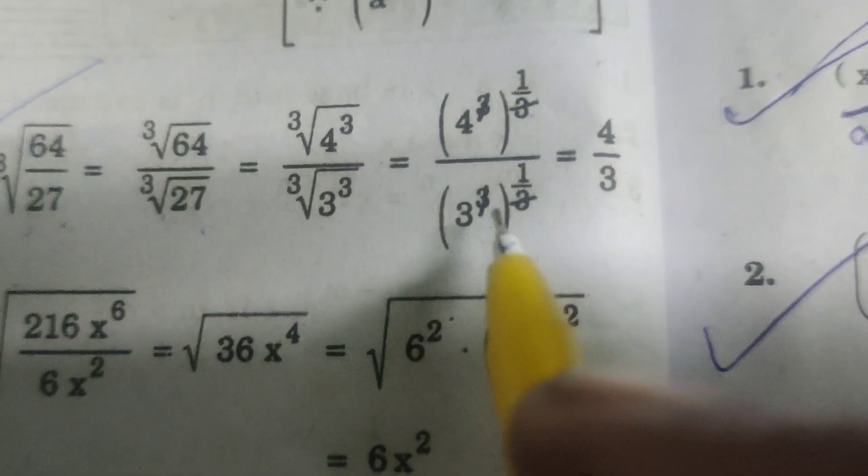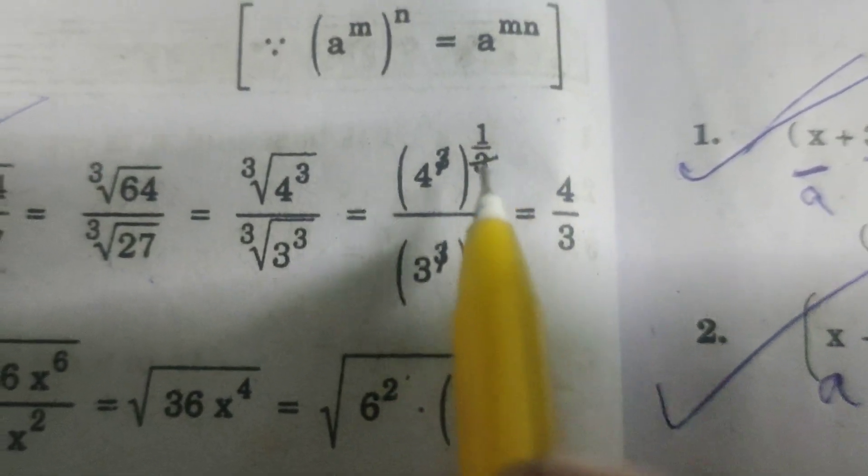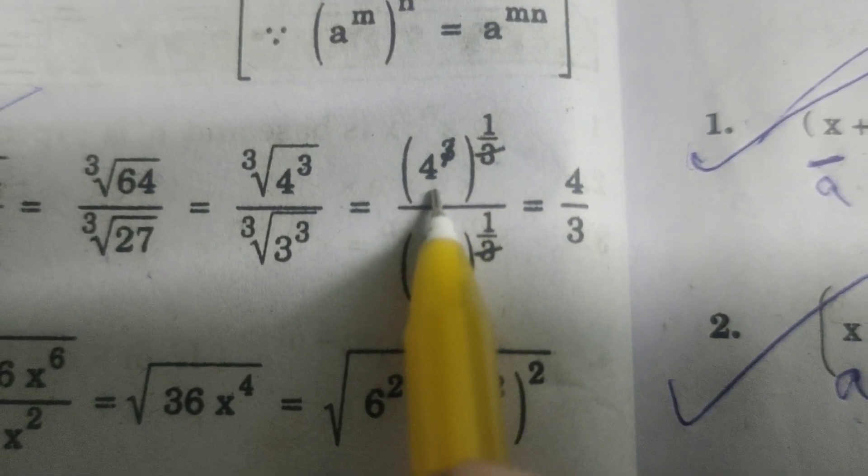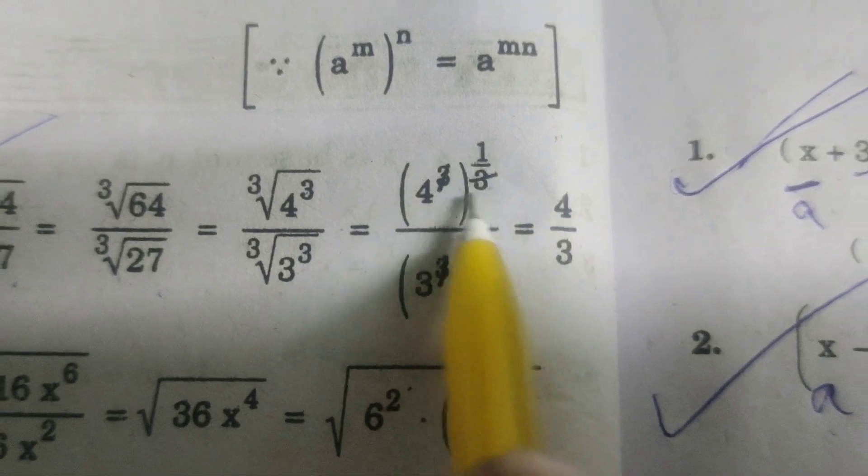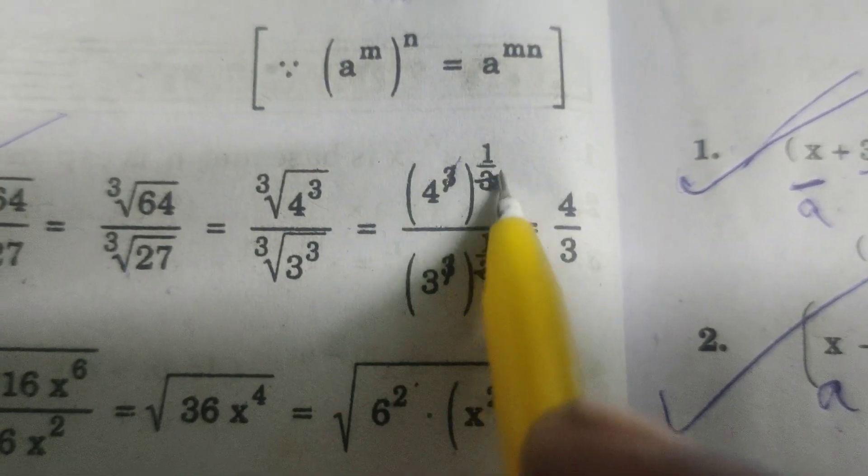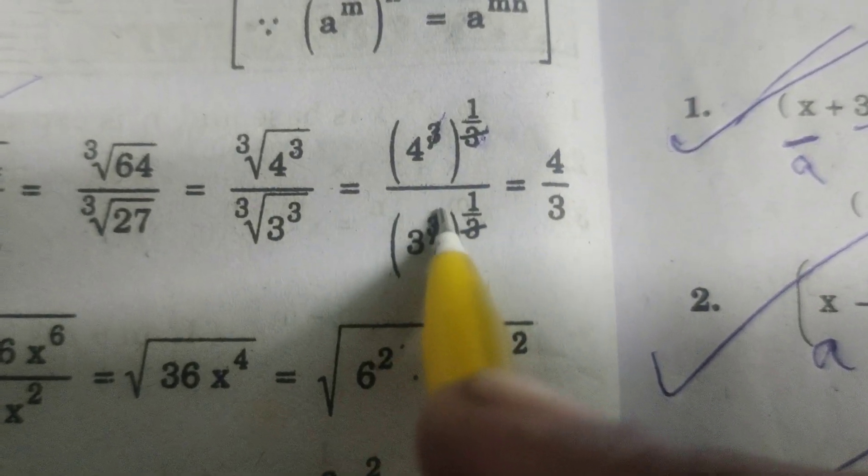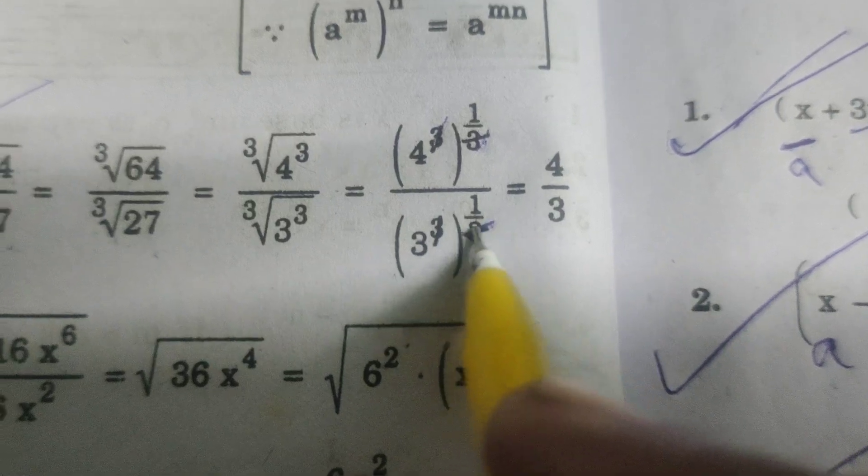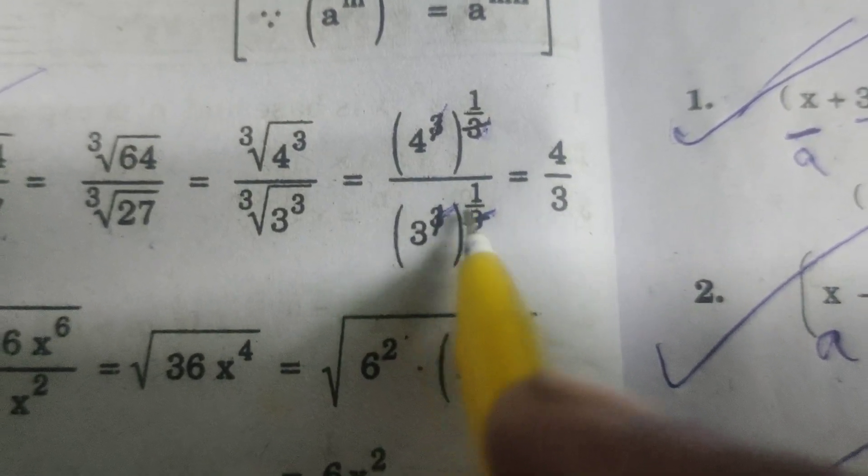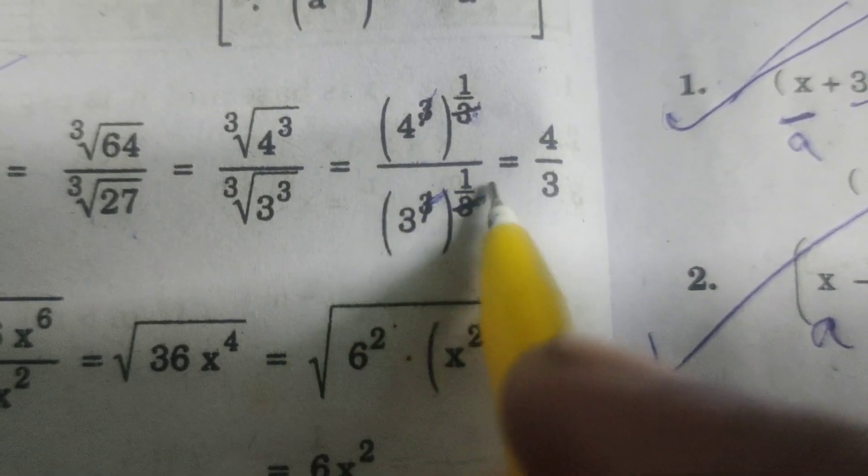Here 4 cube power 1 by 3, 3 cube gets cancelled. 4 power 1, that is 4. 3 cube whole power 1 by 3, 3 cube gets cancelled. That is 3 power 3 into 1 by 3.